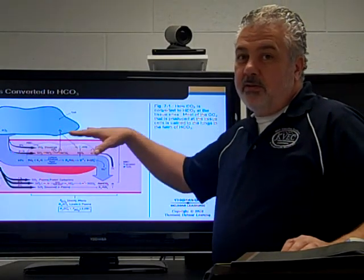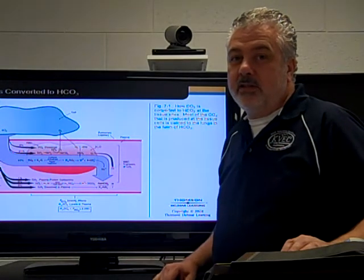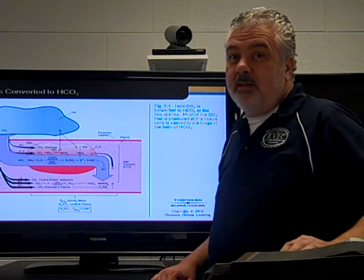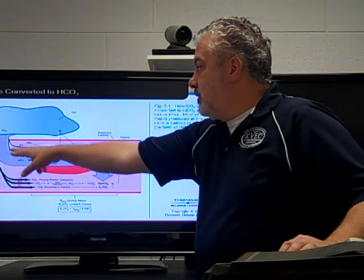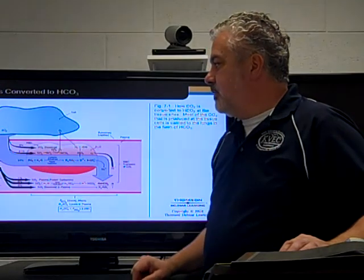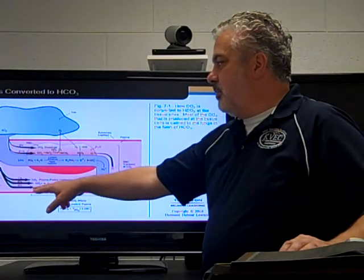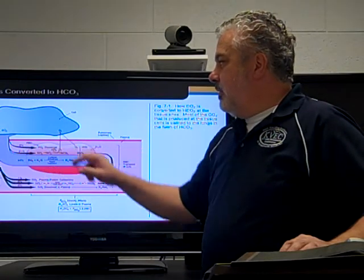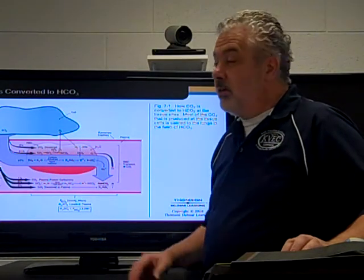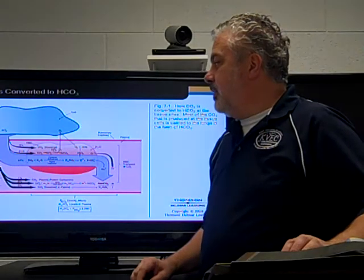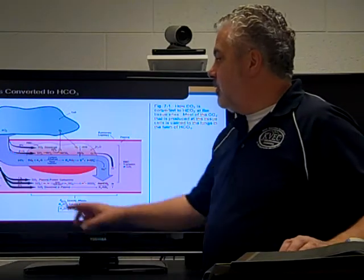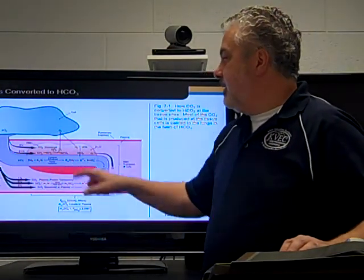The body has to get rid of CO2 because it's toxic — CO2 has acidic properties and will cause the blood to become more acidic if retained. There are three ways CO2 is transported in the plasma and two ways in the red blood cell, but the primary way we're going to focus on accounts for 63% of CO2 transport.